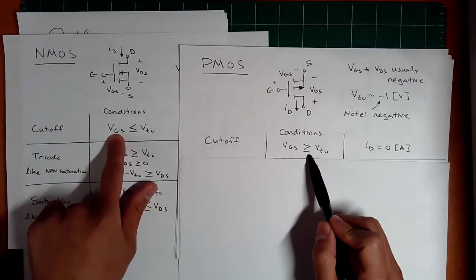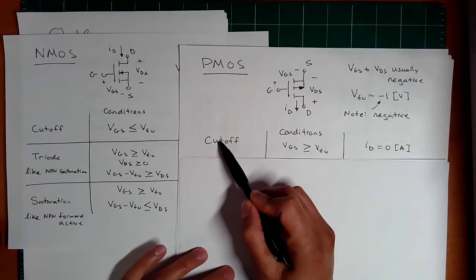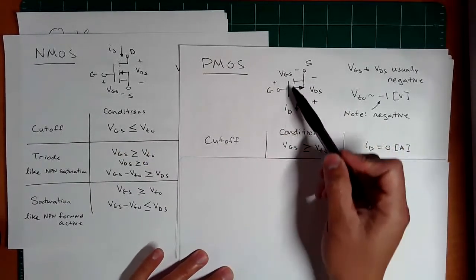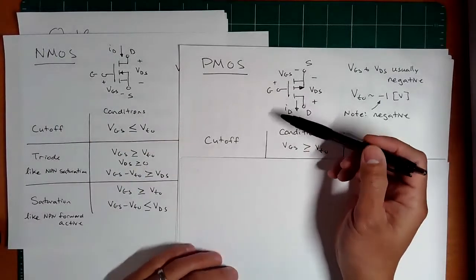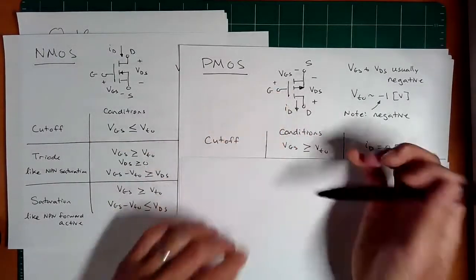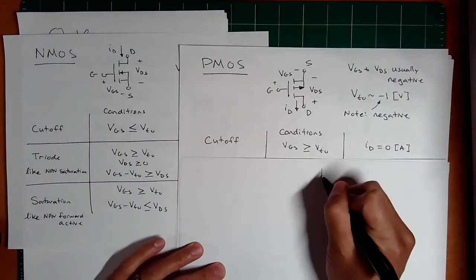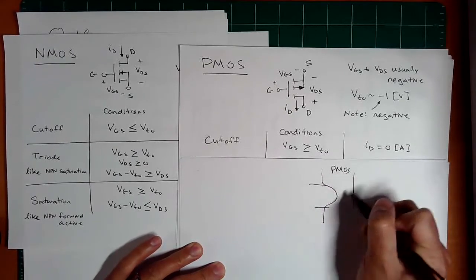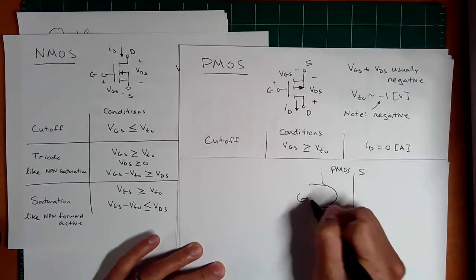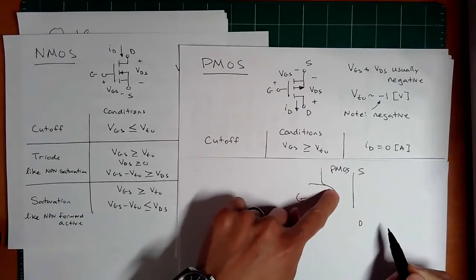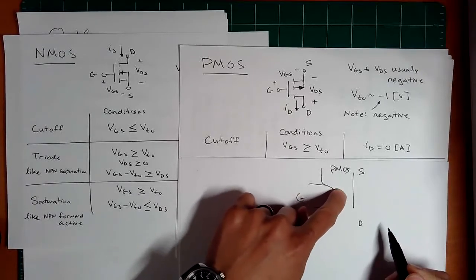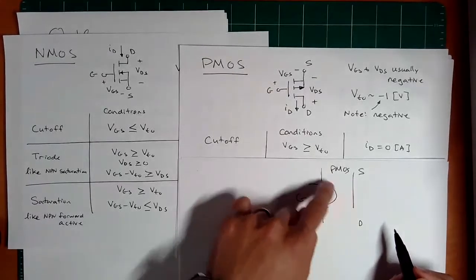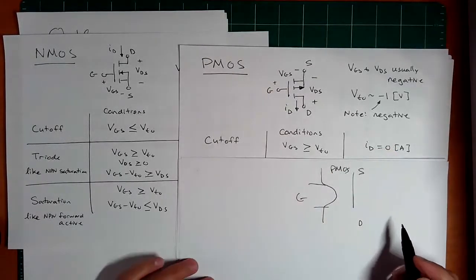And so the conditions here, notice the flip. VGS is now greater than VTO to be in cutoff. So remember that hydro analogy where we had that PMOS as the elastic membrane. In fact, let me just draw both. So we have the hydro analogy here for the PMOS. This is the source drain and gate. If you have more pressure right here on this side, or in other words, if this pressure is small, then you're going to pinch off here and you're not going to have any current.